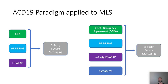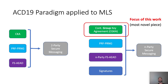The good news is that the ACD 19 paradigm also applies to MLS, of course by considering the group variants of the corresponding primitives. So here we have continuous group key agreement and party forward-secure authenticated encryption, and also signatures for authentication. In our work, we focus on the continuous group key agreement primitive.